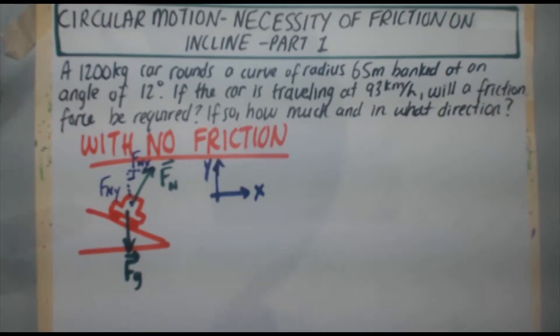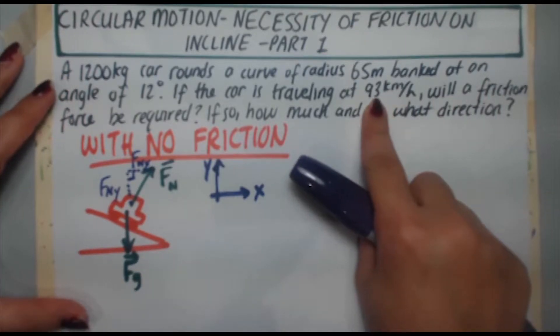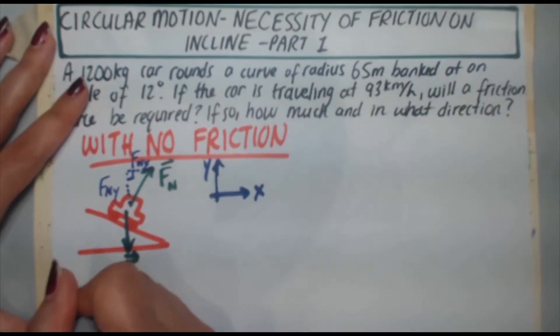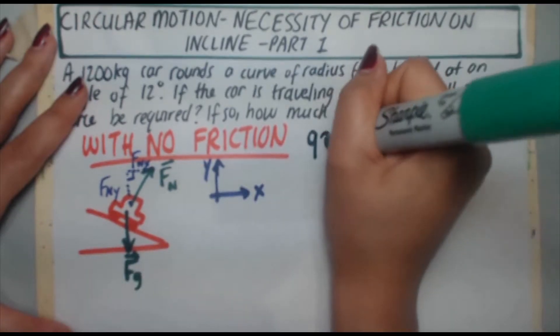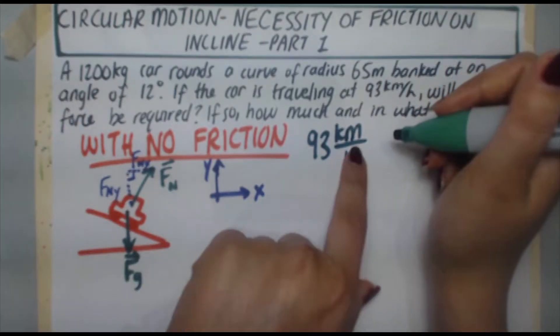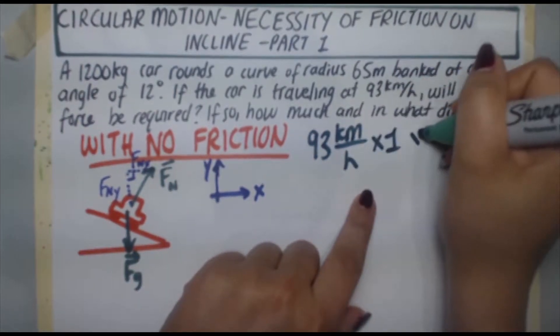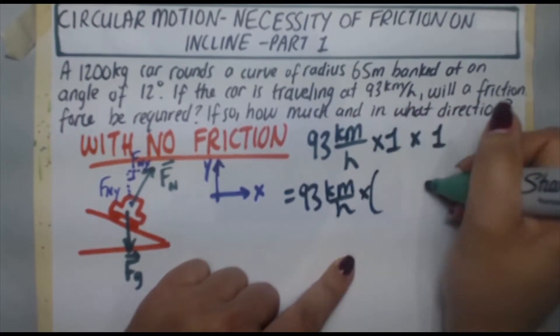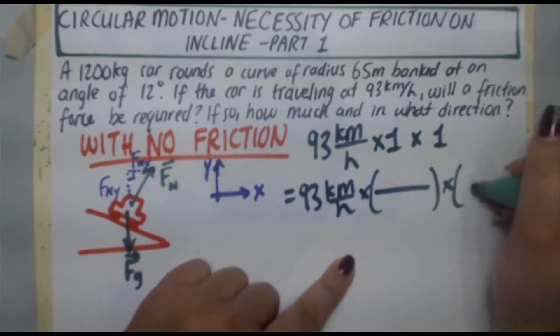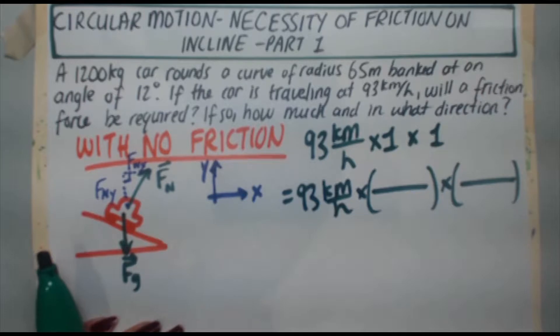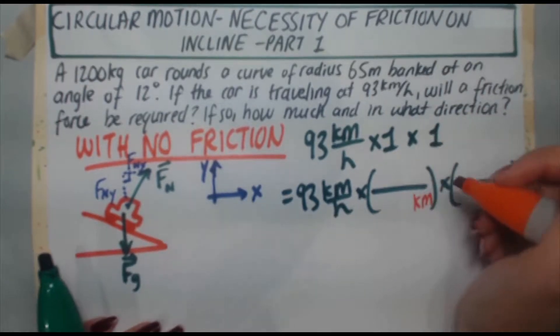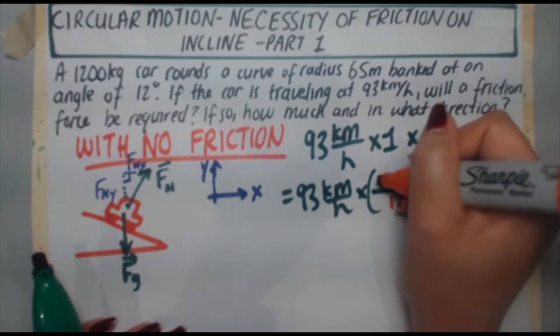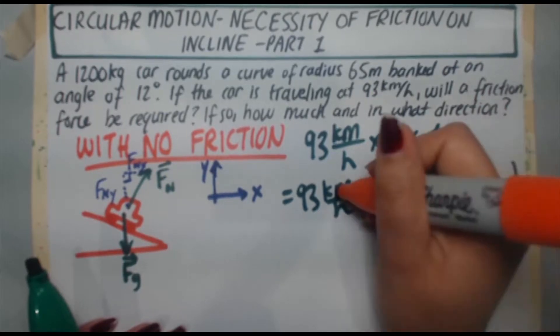Just like in the previous problem, I'm given a speed in kilometers per hour. I need to convert that to meters per second. Let's do that first. Let's do it over here. 93 kilometers per hour. Remember the way you convert units? I'm converting two here, kilometers and hours. Multiply by one twice. Next step, replace the ones with empty fractions. To get rid of the kilometers, I put kilometers down here. I'm trying to get meters. What ratio of meters to kilometers equals one? So one kilometer is a thousand meters. So that gets rid of the KM.